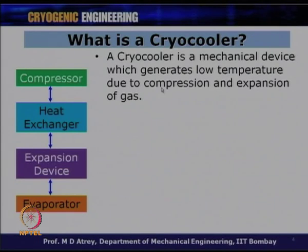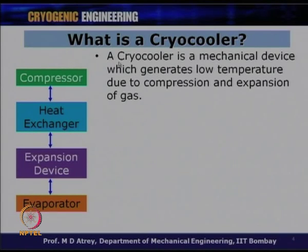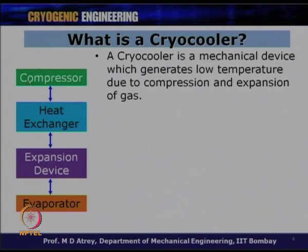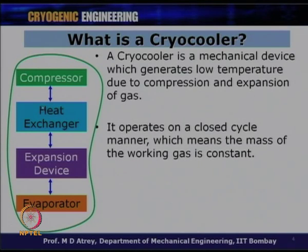A cryocooler is like any other domestic refrigerator — it is essentially a refrigerator that generates temperatures in the cryogenic range, sometimes also called a cryogenic refrigerator or cryorefrigerator. It works with a compressor, a heat exchanger, and an expansion device. Gas gets compressed, comes to the heat exchanger, exchanges heat, gets expanded producing cold, delivers that cold to the object to be cooled, and then the gas goes back — the cycle continues. This is a closed cycle manner, meaning the mass of the working gas is constant.